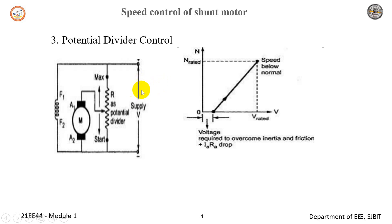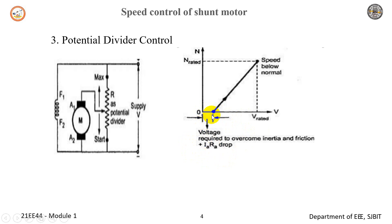Speed down to 0 is not possible in the previous method because we would need to insert a larger rheostat in series with the armature, which is practically impossible. If speed control from 0 to rated speed is required, then we need to employ this potential divider arrangement as shown in the figure. The voltage across the armature can be varied by varying this potential divider resistance. When the voltage across the armature starts increasing, as long as the motor does not overcome the inertia and frictional torque, the speed of the motor remains 0. Once it overcomes this drop, the motor starts. Hence the graph of voltage versus rated speed does not pass through the origin, because some voltage is used to overcome inertia and friction.